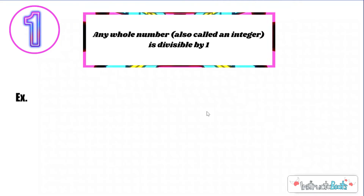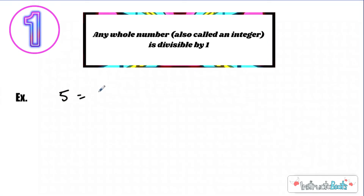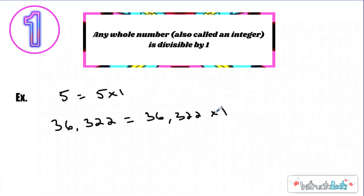Our first number is 1. Any whole number, which is also called an integer, is divisible by 1. Even prime numbers — you multiply the number times 1 and you get that number. Some examples: 5 is divisible by 1 because 5 times 1 equals 5; 36,322 times 1 is itself. Everything is divisible by 1, so we're not even going to do the 'you try' part for this.